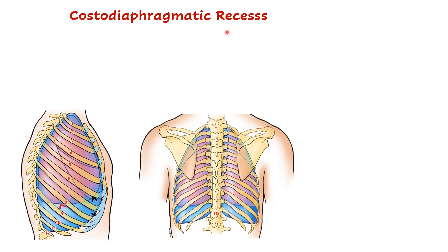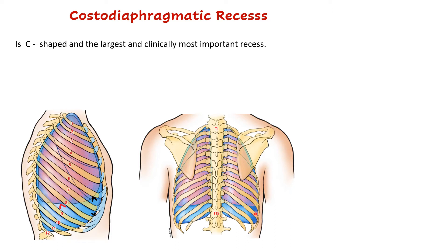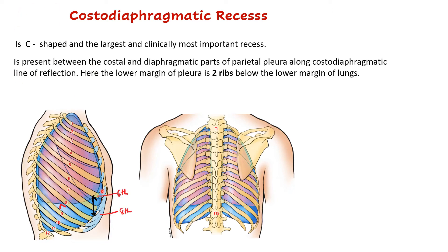The costodiaphragmatic recess is C-shaped and is larger compared to the costomediastinal recesses, and also clinically more important. This recess is present between the costal and the diaphragmatic parts of the parietal pleura along the costodiaphragmatic line of reflection. Where this recess exists, there is a difference of two ribs between the lower margin of the lung and the lower margin of the parietal pleura, and because of that this recess is created.